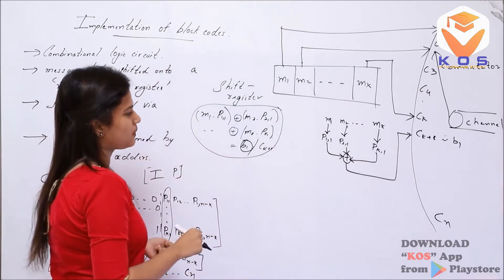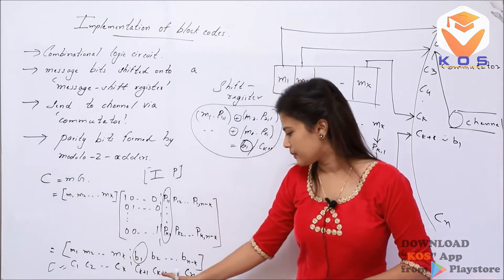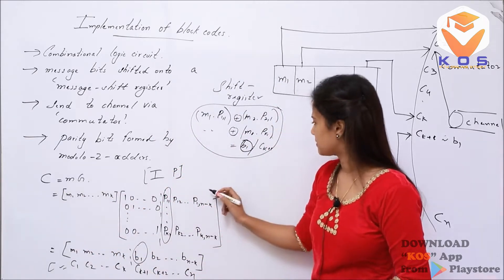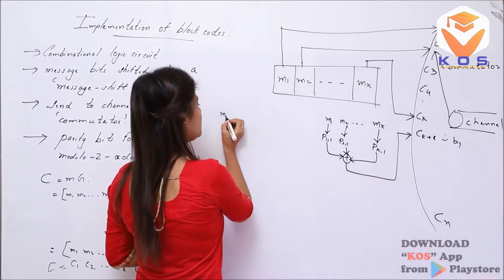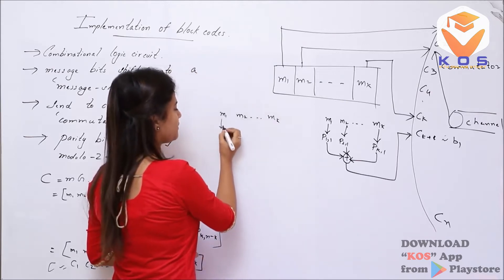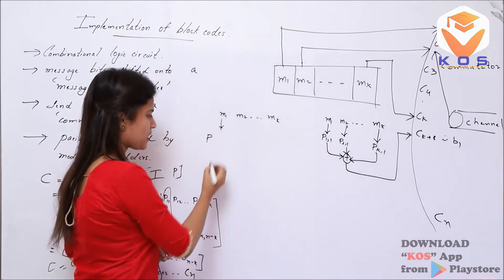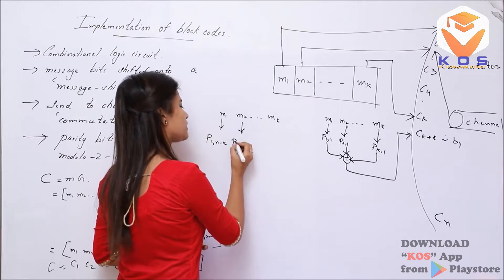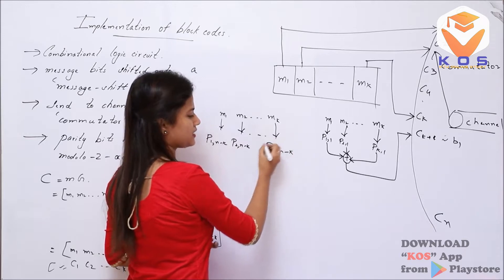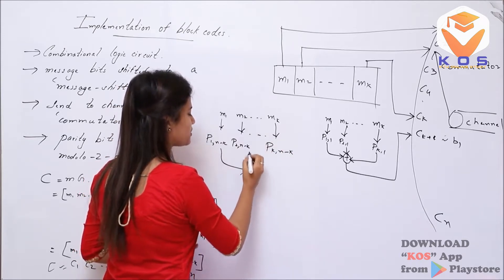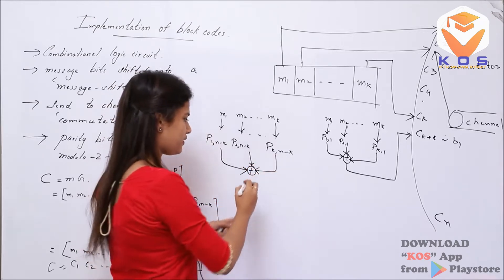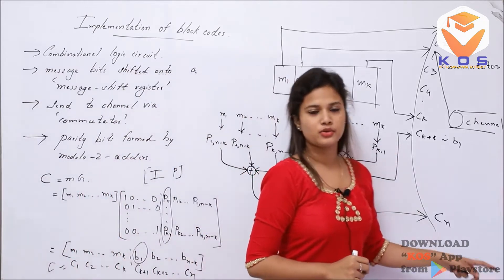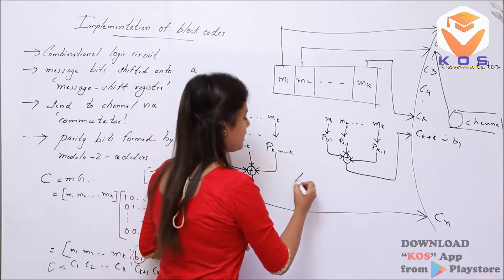The next cases are Ck+2, Ck+3, and so on up to the cn element, which is the last element. For cn, we have inputs m1, m2, etc. up to mk, multiplied with P1(n-k), P2(n-k), etc., up to Pk(n-k) — the last element of the P matrix. XORing these gives the final cn value. This is called the encoding circuit.